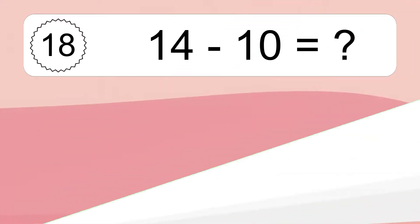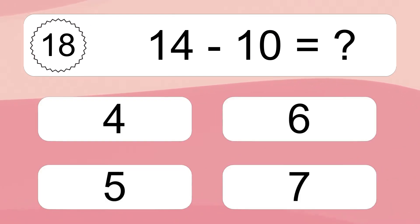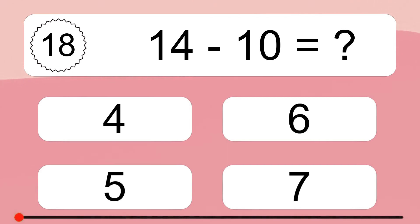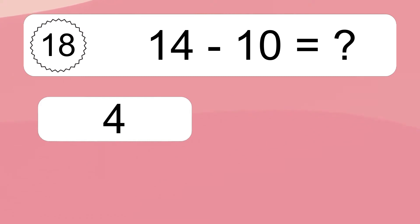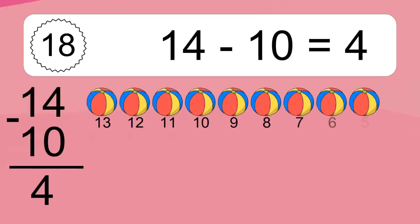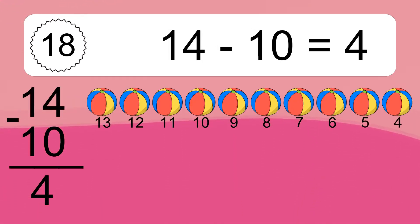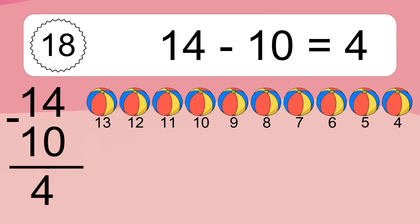14 minus 10 equals what? 14 minus 10 equals 4. Let's count it: 13, 12, 11, 10, 9, 8, 7, 6, 5, 4.